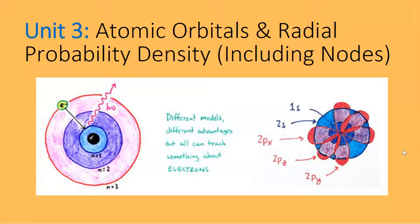Let us continue our journey in understanding where electrons can be found in an atom. In unit three, that journey started with the idea that electrons can be considered as waves. We discussed the Bohr model, de Broglie's wavelength, Heisenberg's uncertainty principle, and Schrödinger's equation, which gives us what's called atomic orbitals — volumes in which electrons can most likely be found. In this video we will show you most of the different types of atomic orbitals.